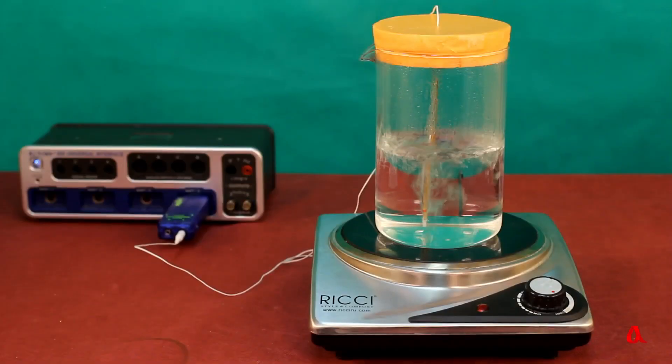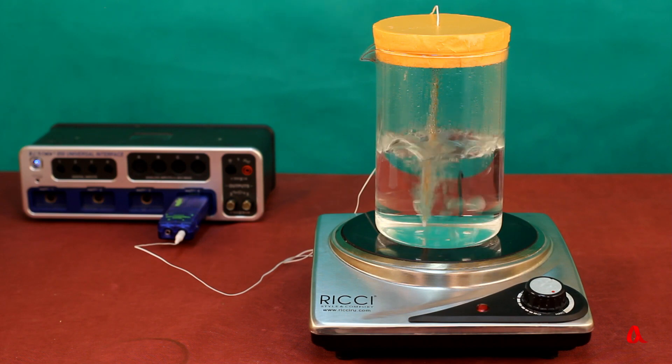In boiling water, water vapor bubbles float up from the bottom and walls of the glass. The greater the heating capacity of the hot plate, the more intense the boiling.